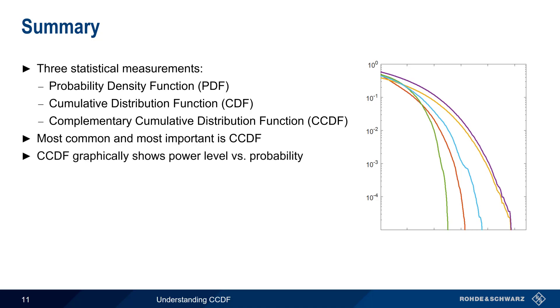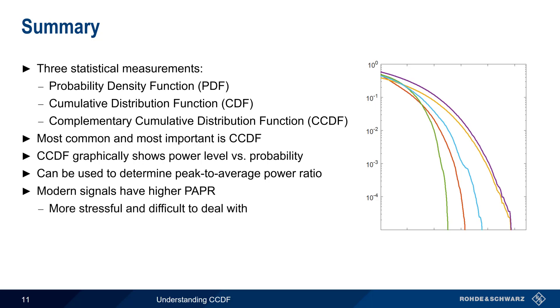CCDF graphically represents the percentage of time that a signal reaches or exceeds a certain power level, and thus also provides information on the signal's peak-to-average power ratio. Modern modulation schemes have increasingly high peak-to-average ratios, and this places additional stress on both passive and active devices. Therefore, CCDF is an important measurement in designing and testing devices used in modern radiofrequency applications.